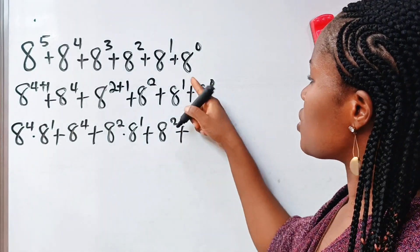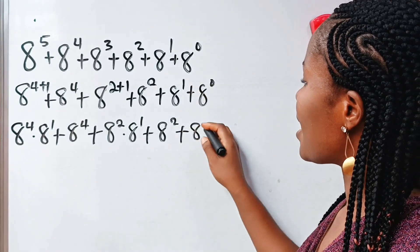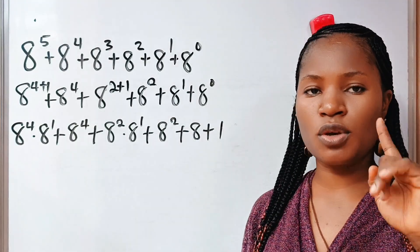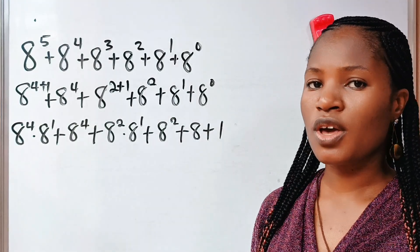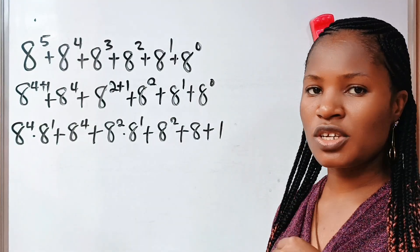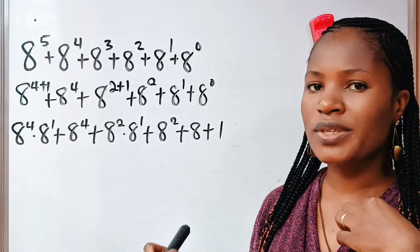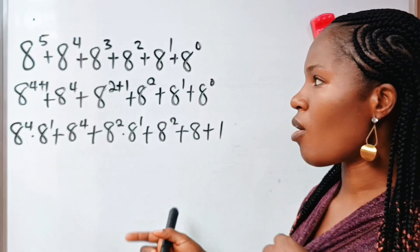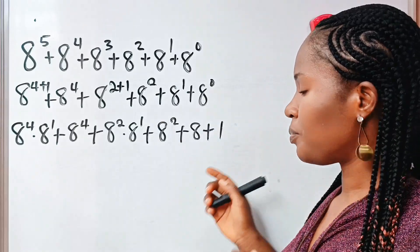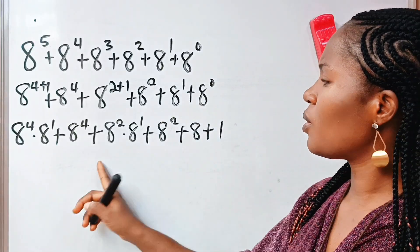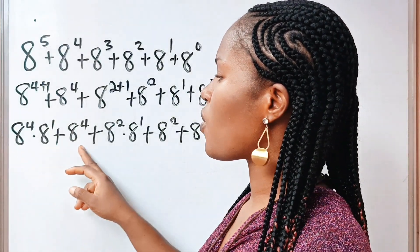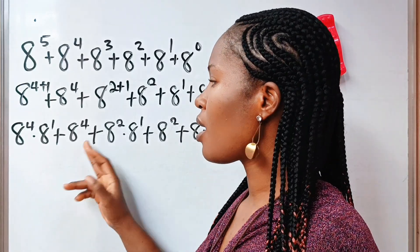Then, plus 8 to the power of 1 is 8, and 8 to the power of 0 is 1. Yes, any number raised to the power of 0 is 1 — I have a proof of that on this channel, so you can go ahead and look for it. Now, notice that we have 8 to the power of 4 here and 8 to the power of 4 here.